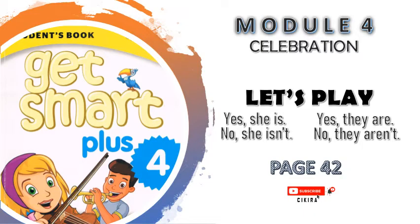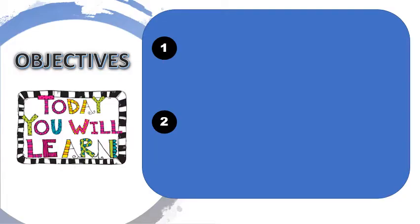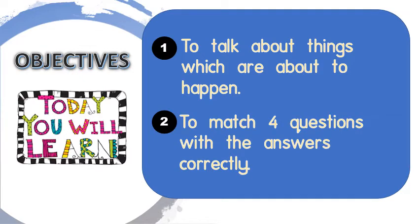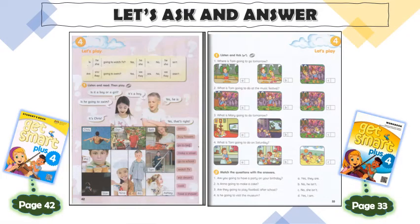Assalamualaikum, let's continue our lesson today with module 4. Today we're going to use 'yes she is,' 'no she isn't,' as well as 'yes they are,' 'no they aren't.' Let us review the objectives. Firstly, you will learn to talk about things which are about to happen — kamu akan belajar macam mana nak bercerita tentang kejadian yang akan berlaku sekejap lagi. Secondly, you will match four questions with the answers correctly.